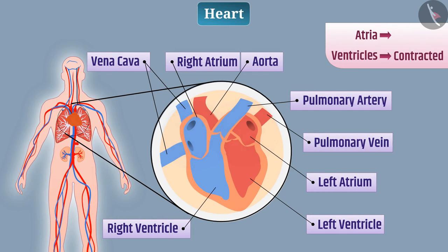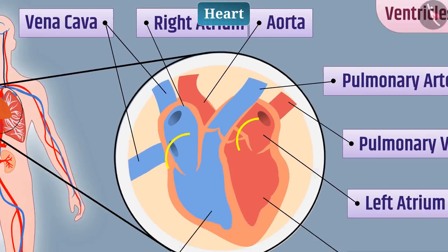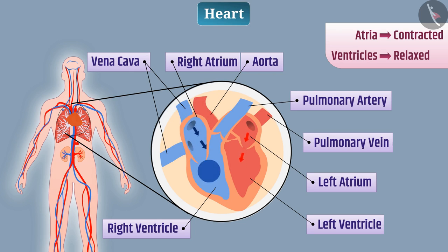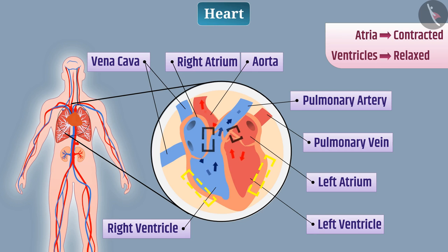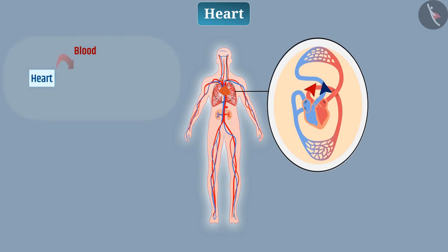When both atria contract and both ventricles relax, the valve between the atrium and ventricle opens. Oxygenated blood transfers from the left atrium to the left ventricle, and deoxygenated blood transfers from the right atrium to the right ventricle. Since the ventricle pumps blood throughout the body, the muscular wall of the ventricle is thicker than the wall of the atrium.